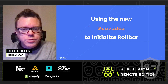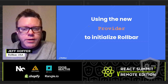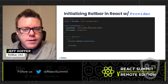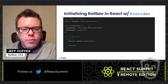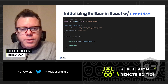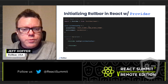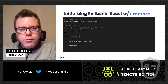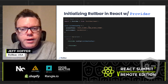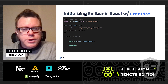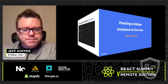We start with a new way to initialize Rollbar using the provider component. The provider from Rollbar React should be very familiar as it follows a common React pattern. All we need to get started is to create a Rollbar configuration and pass it to the provider, which will initialize Rollbar and make it available to the React tree below it.